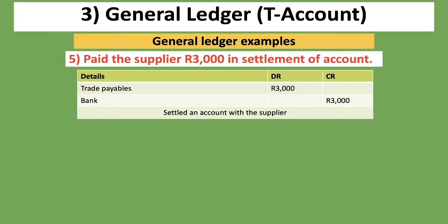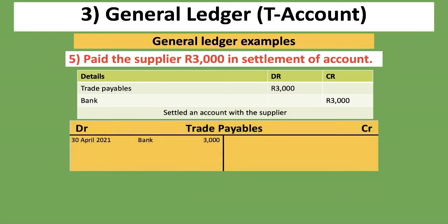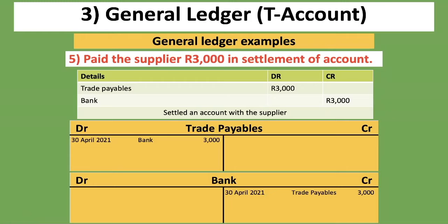The fifth transaction: pay the supplier 3,000 rand in settlement of account. Trade payables is decreasing — a liability decreases on the debit side. Bank is also decreasing, so it goes on the credit side. For the trade payables T-account, put the date, detail as bank, and amount 3,000 rand. For the bank T-account, put the date — 30 April 2021 — detail as trade payables, and amount 3,000 rand.